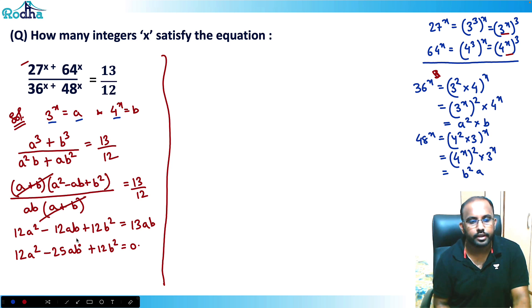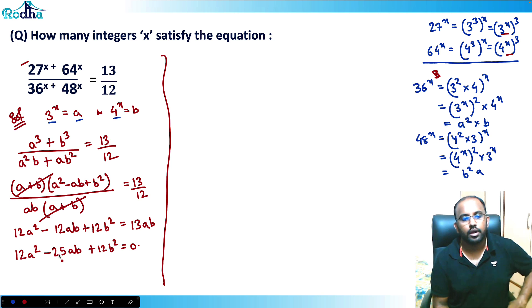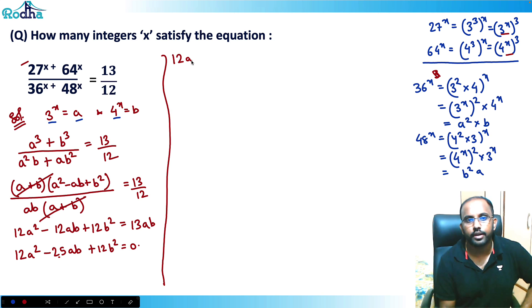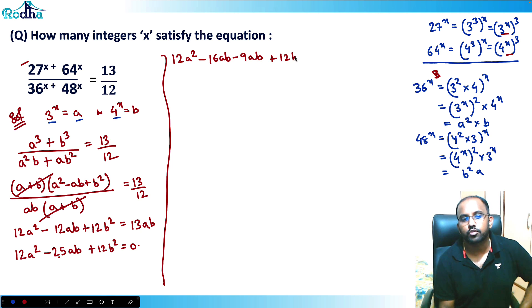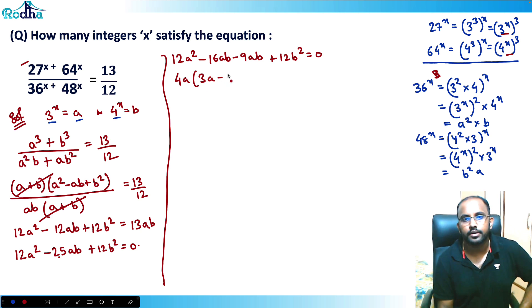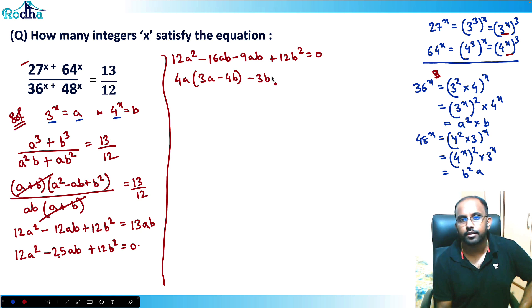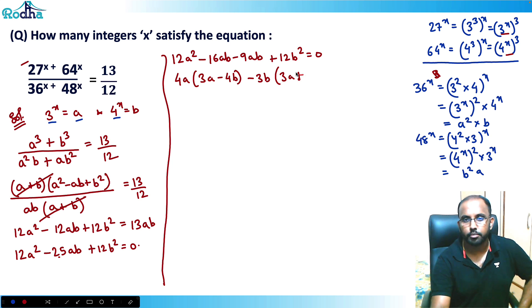Now I factor this quadratic. Since 12 × 12 = 144 = 16 × 9, I split the middle term: 12a² - 16ab - 9ab + 12b² = 0. Taking 4a common from the first pair and -3b from the second: (4a - 3b)(3a - 4b) = 0.